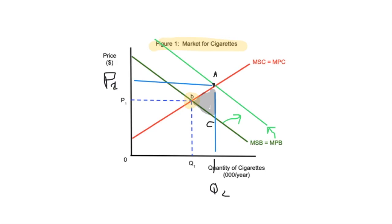So there's the diagram for negative externalities of consumption. This is the MSB curve, this is the MPB curve.